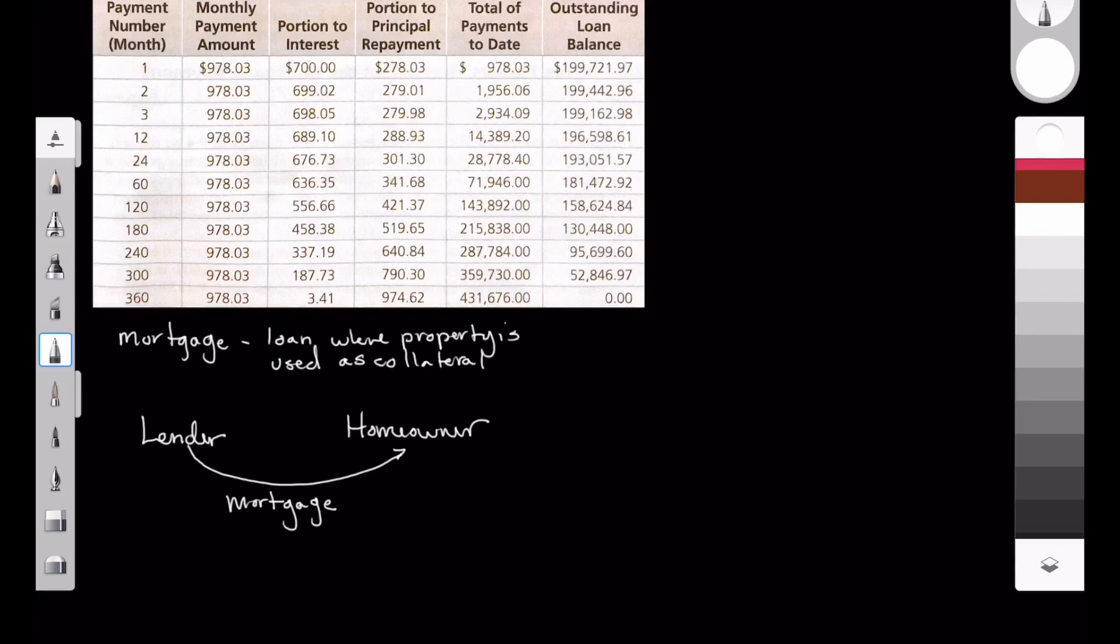And then we have a prospective homeowner. So the lender is going to provide the homeowner with a mortgage, and so that mortgage is going to involve providing them with a lump sum so they can use to purchase a home. And then in return,